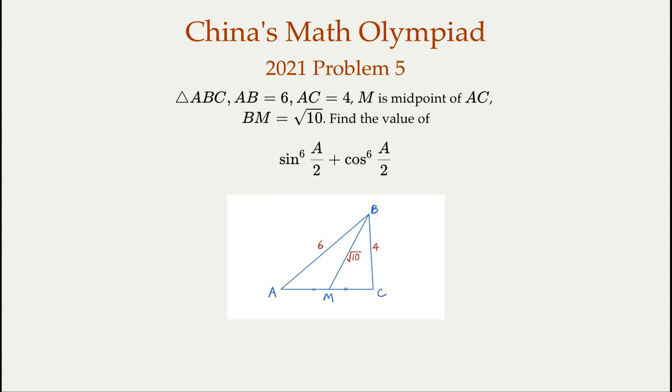All right, this is from Math Olympiad in China, 2021. Again, it's a fill-in-the-blank problem, which means it's a problem that shouldn't take too much time. So let's see, here we're given ABC triangle with two sides 6 and 4 given, and also the median length here is square root of 10. We try to find the half angle of angle A, we try to find sin^6(A/2) and cos^6(A/2). Even though it's a geometry problem, it's more like algebra and trigonometry. So why don't you give it a try? Pause the video and try to solve it, find the answer, and come back. So when you're ready, let's continue.